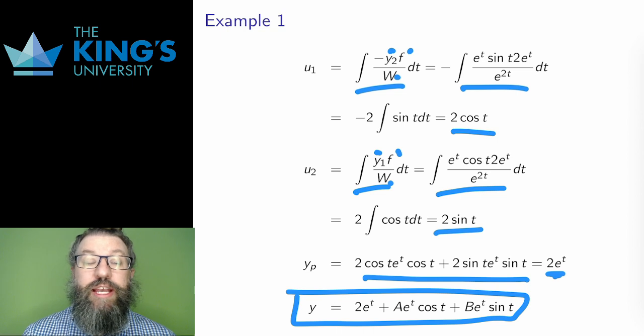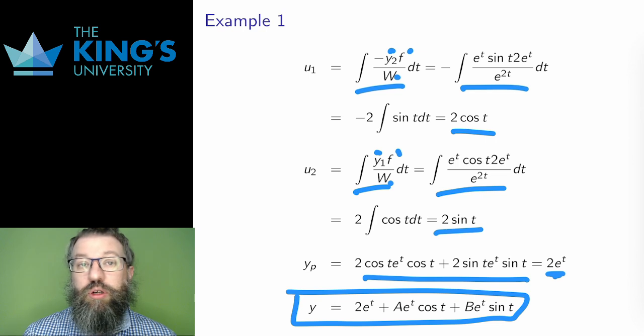This is the method. It's pretty algorithmic. Calculate the Wronskian, calculate the integrals for u1 and u2, and then put it all together.